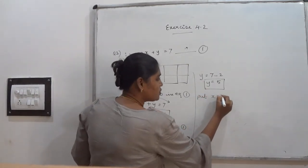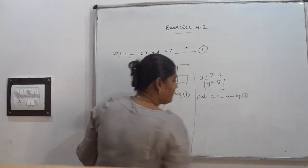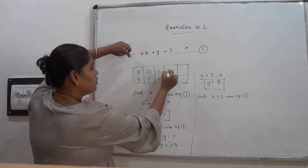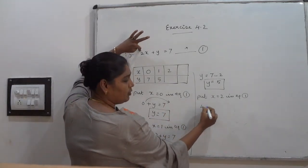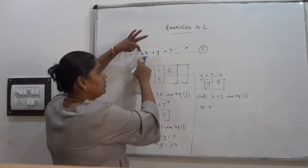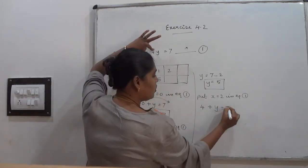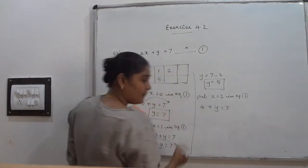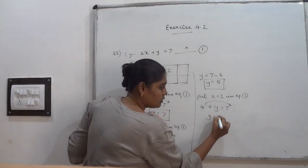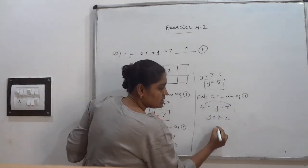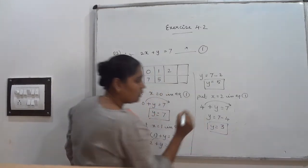Put x = 2 in equation number 1. Substituting: 2 × 2 = 4, so 4 + y = 7. Moving 4 to the other side: y = 7 − 4 = 3. When x = 2, y = 3.